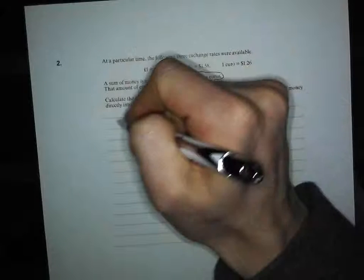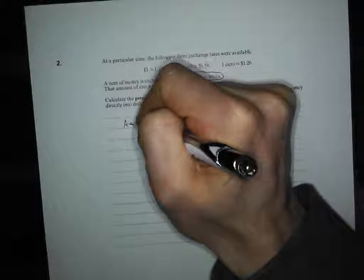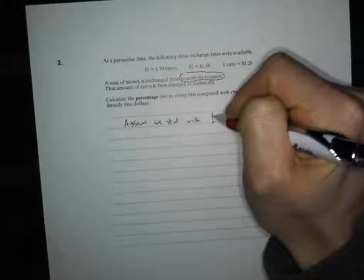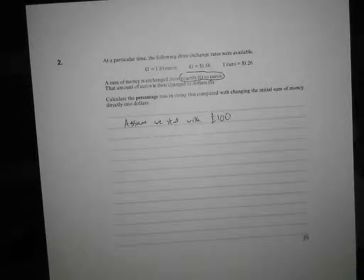Calculate the percentage loss in this compared with changing the initial sum of money directly into dollars. Flipping heck. Now, my advice is this. Assume we start with 100 pounds. Now, the advantage of doing that is it just keeps the numbers relatively nice.